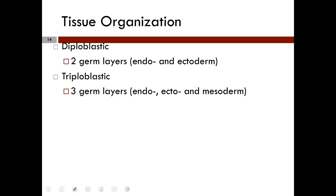Triploblastic animals still have endoderm and ectoderm, but now also include the mesoderm. The mesoderm gives rise to most other body structures, including the circulatory system when present, skeletal structures, and muscles.